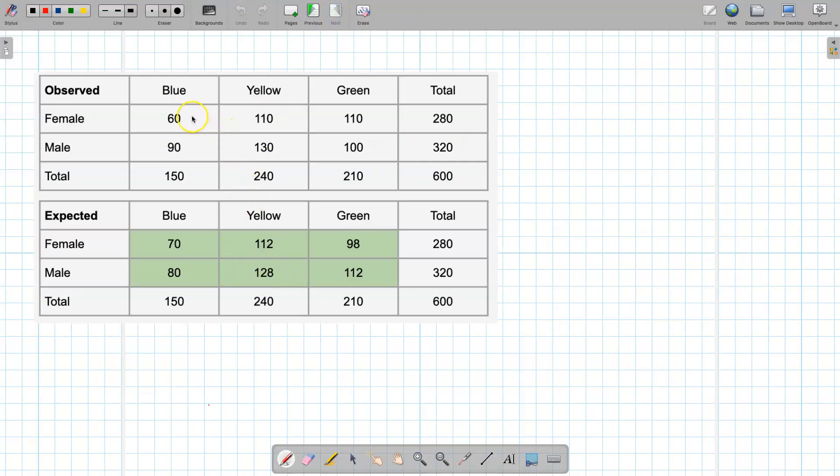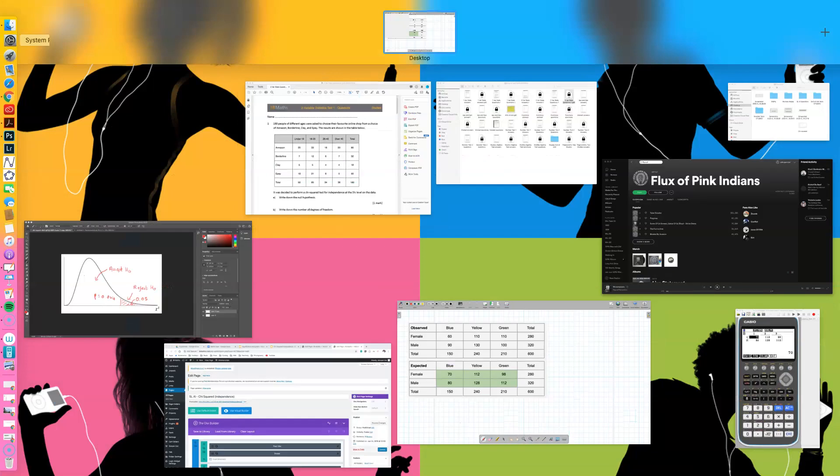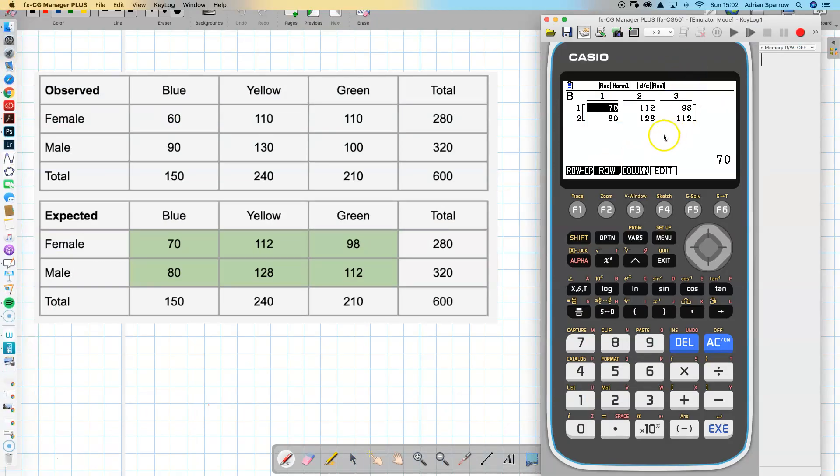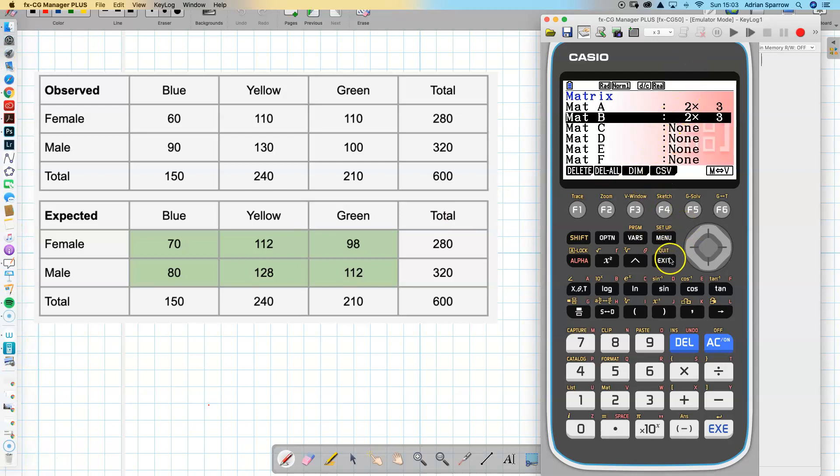I've now got my observed and my expected. I get my calculator again just to show you those, and they're both in this thing here in the menu. So I was in the run menu and the matrix.